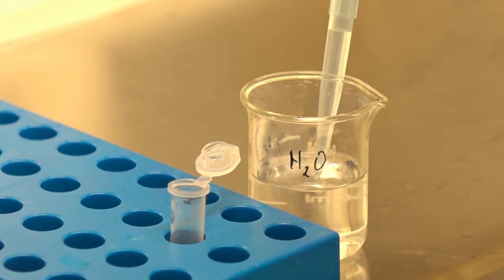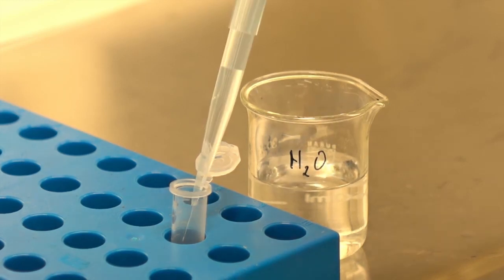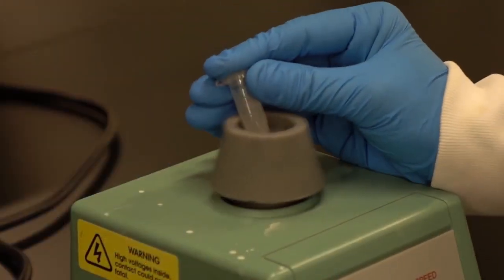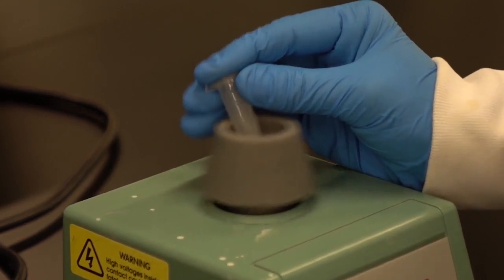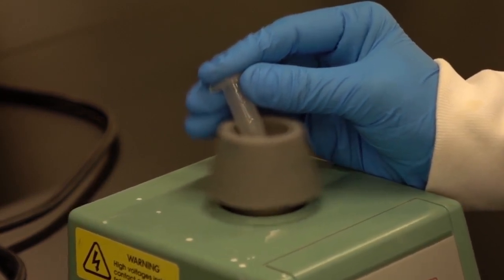Add one milliliter of ultra-pure water to the tube and vortex for one to two minutes until the collected bacterial pellet is no longer visible at the bottom of the tube.